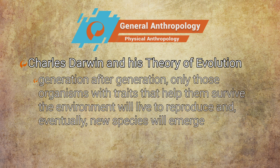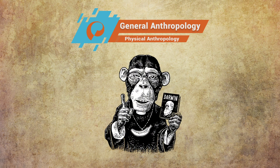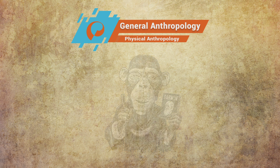Generation after generation, only those organisms with traits that help them survive the environment will live to reproduce and, eventually, new species will emerge. However, Darwin did not have the answers to questions of how exactly these traits were passed on to offspring and why the variations occurred.